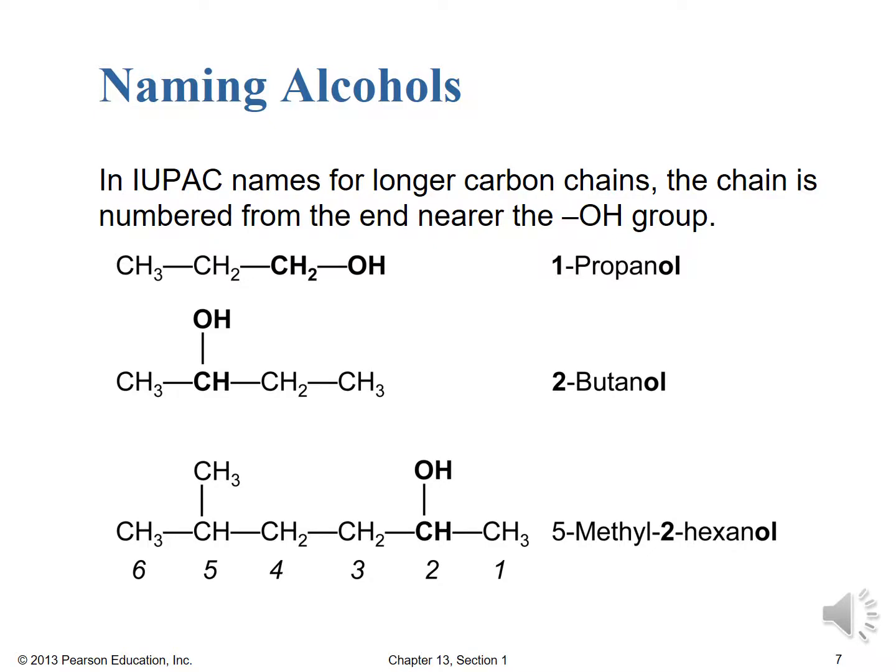Looking at skeletal structures: 1-propanol has the OH group on a terminal carbon. For 2-butanol, there's more steric hindrance around it. Remember that left to right, right to left — it's all relative in chemistry; all those single bonds can freely rotate. What we should focus on is looking for functional groups: double or triple bonds, halogens, and now OH groups for alcohols.